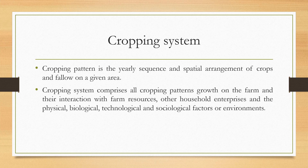There are several different types. We can follow different types of cropping systems for different yield types. The cropping system comprises all the cropping patterns, showing growth on the farm and their interaction with farm resources, household enterprises, and physical, biological, technological and sociological factors. The cropping system will increase or decrease the yield based on the selection of which type of cropping system you are following in your field.